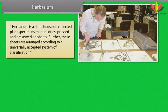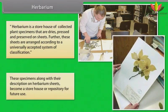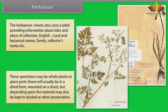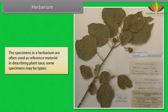Herbarium: A herbarium is a storehouse of collected plant specimens that are dry, pressed, and preserved on sheets. These sheets are arranged according to a universally accepted system of classification. The specimens, along with their description on herbarium sheets, become a repository for future use. Herbarium sheets carry a label providing information about date and place of collection, English, local, and botanical names, family, and collector's name. Specimens may be whole plants or plant parts, usually dried and mounted on a sheet, but may also be kept in alcohol or other preservatives. Specimens in a herbarium are often used as reference material in describing plant taxa.